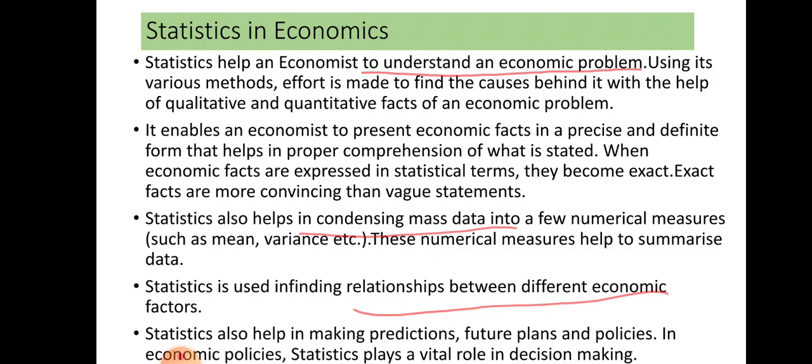For example, during the COVID situation, to supply vaccines, the government needs to know how much vaccine will be needed for a particular state. The government uses existing population data — for instance, the 18 to 44 age group receiving COVID vaccines — to determine how many individuals are in that group in a state, and accordingly makes policy and plans. So statistics helps in making predictions, future plans, and policies.